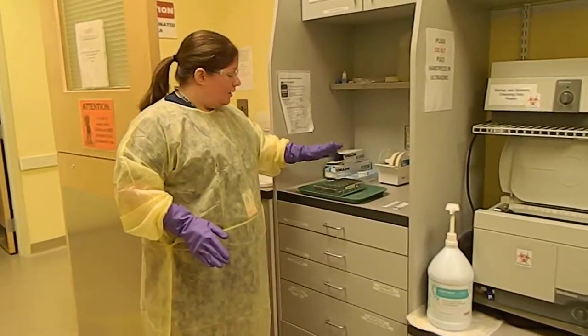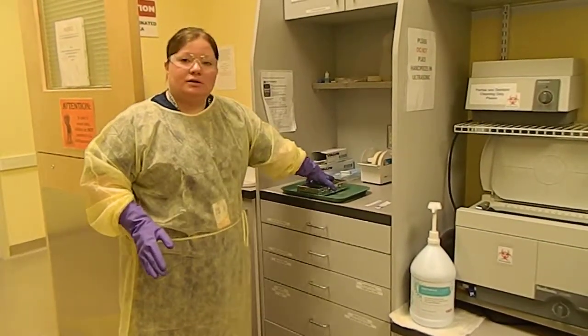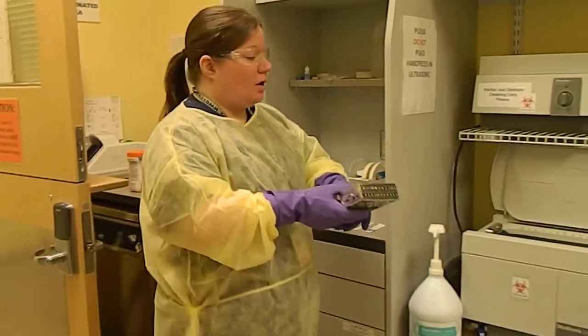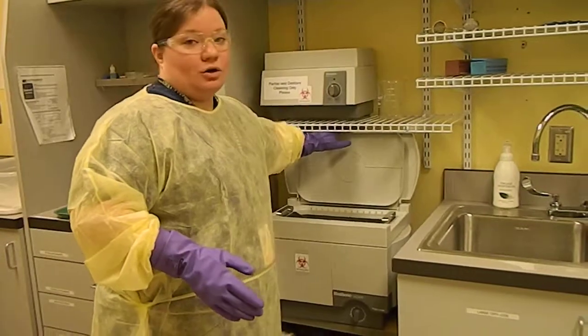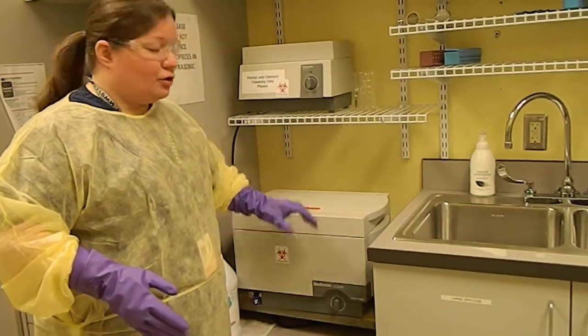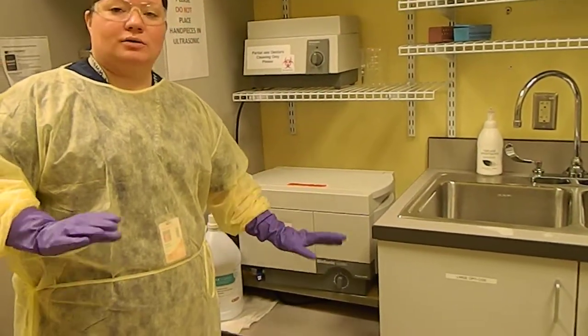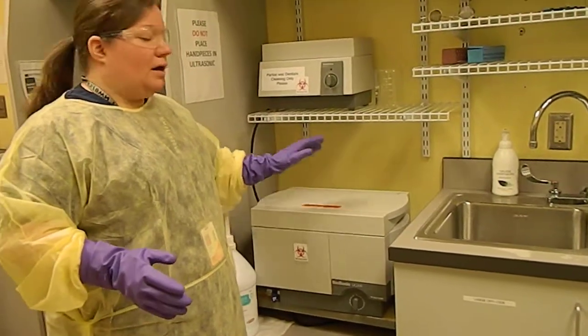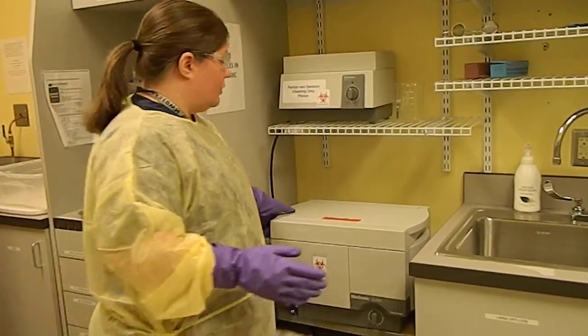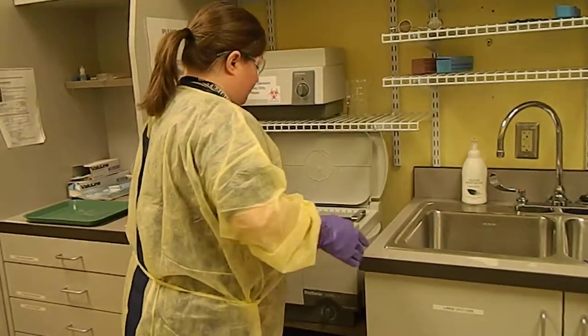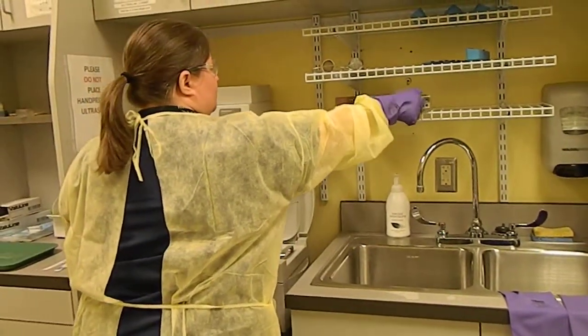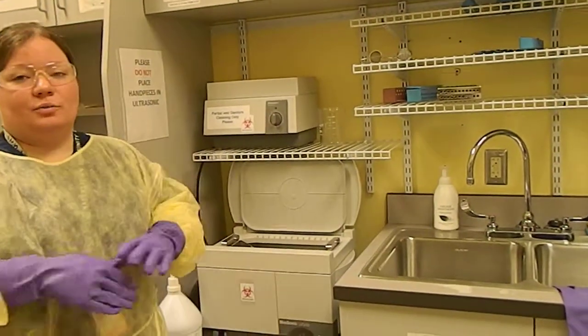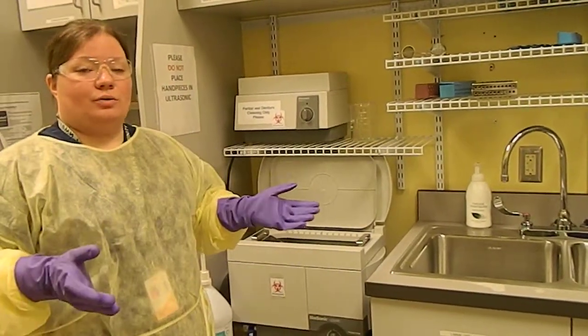My cassette is dirty so what I'm going to do is put it into the ultrasonic. It would be full of water. We're going to close the lid and turn it on and it would buzz for about 10 minutes or so. And then once it's finished we're going to take it out, set it on the drying rack, let it dry off for a few minutes and then we're going to wrap it.